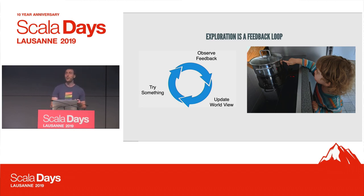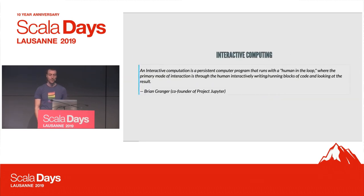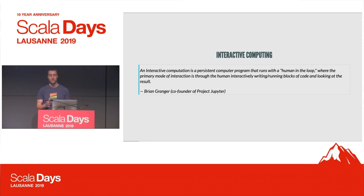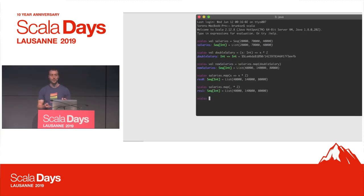So, what about exploring code or data? One approach for creating this fast feedback loop is interactive computing. Interactive computing basically means we have a system which lets us write a block of code, immediately runs that code, and prints back the results. And we can do that in a loop, giving us this fast feedback cycle. And if you think about it, that definition essentially describes a REPL.